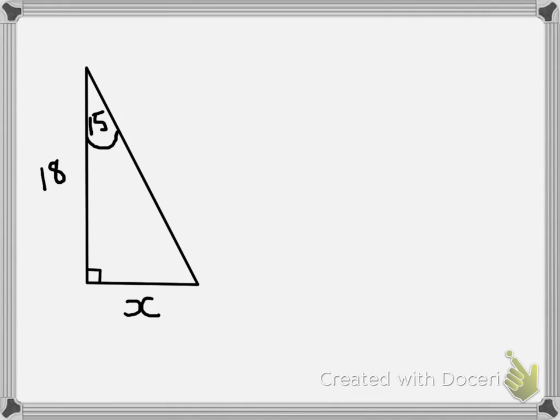So as you can see here, I have a right-angled triangle with an angle of 15 degrees, a side value of x, and another side of length 18.